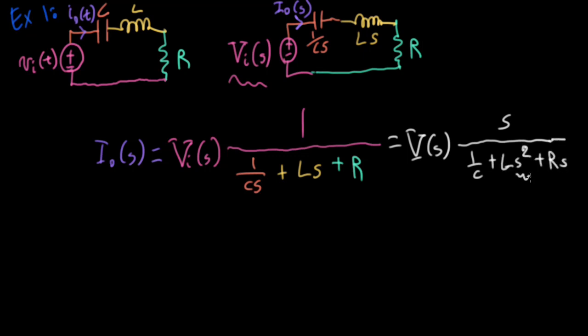Now, I really want to get the S squared by itself without a constant. So I'll divide the numerator and the denominator by L. So I'll have S divided by L in the numerator. And then I'll have S squared plus R over L S plus 1 over L C.